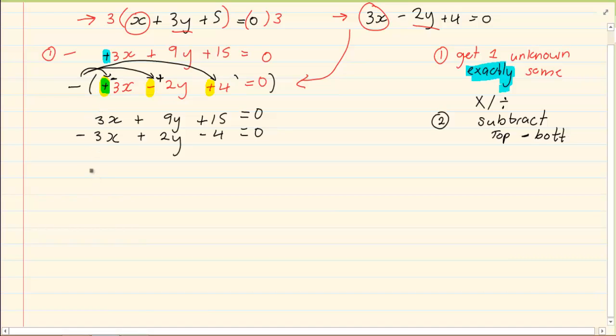3 minus 3 is equal to 0. Plus 9 plus 2 is 11y. 15 minus 4 gives me 11 is equal to 0. Now we have a linear equation. So we solve the linear equation. Using our linear rules, we got y is equal to minus 1.